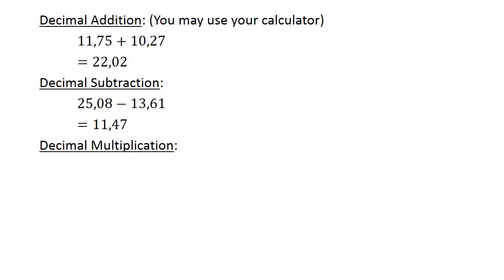Decimal multiplication. 0.7 times 0.01 equals 0.007.